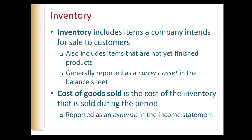At the end of the period, the amount the company reports for inventory is the cost of inventory not yet sold. But what happens to the cost of the inventory sold during the period? The company reports the cost of the inventory it sold as cost of goods sold in the income statement. Determining the amount of ending inventory and cost of goods sold is a critical task in accounting for inventory. Inventory is also referred to as merchandise inventory, while cost of goods sold is also referred to as cost of sales.